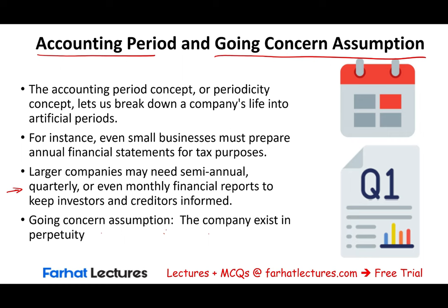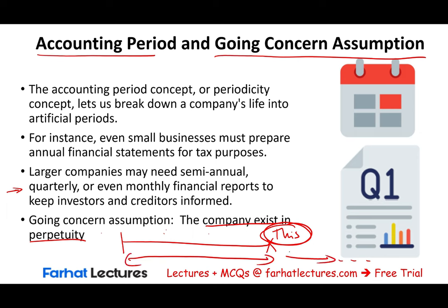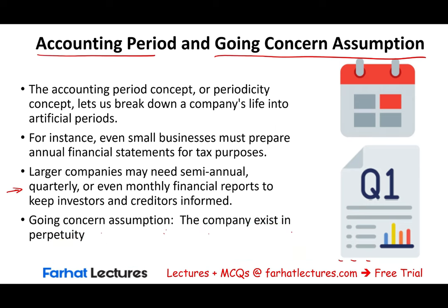The going concern assumption assumes that the company exists in perpetuity — it's not going to end this year or next year. We assume this because if we assumed the company's life were ending, we'd account for things differently. Because we assume the company will continue, we have to spread assets and liabilities over the life of those assets and liabilities.